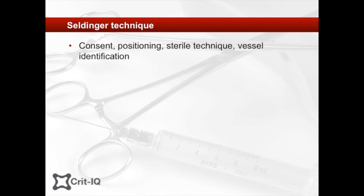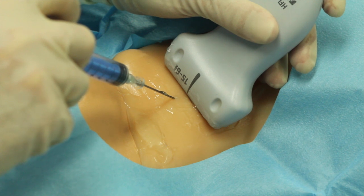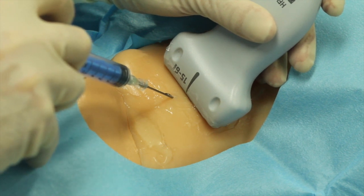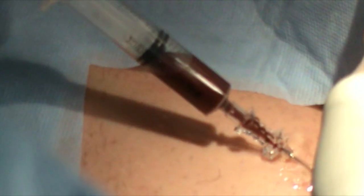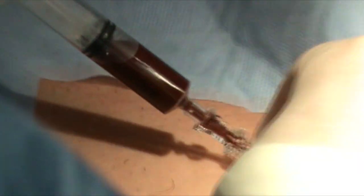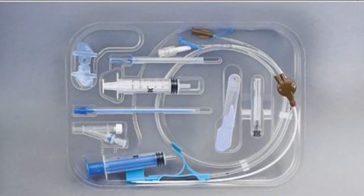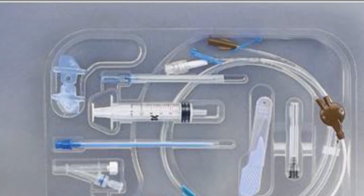Step 1. Following appropriate consent, patient positioning, sterile measures and vessel identification, the first Seldinger step is the placing of a hollow needle into the target vessel, usually under ultrasound guidance. Venous blood should be easily aspirated into the syringe. Some packs may include a plastic cannula, which can be advanced over the needle and into the vein.